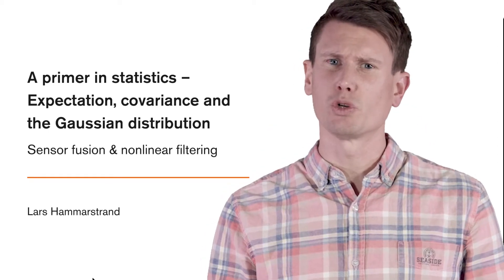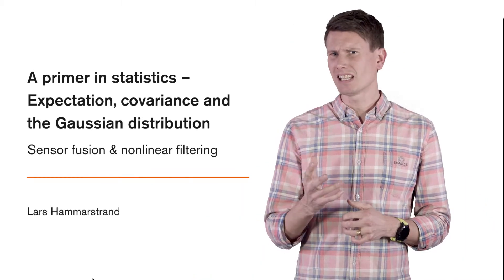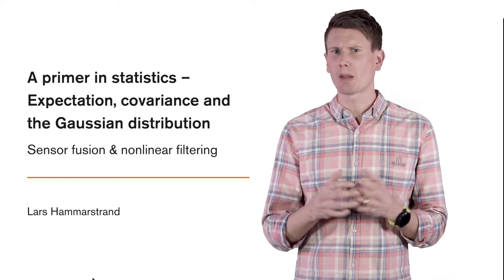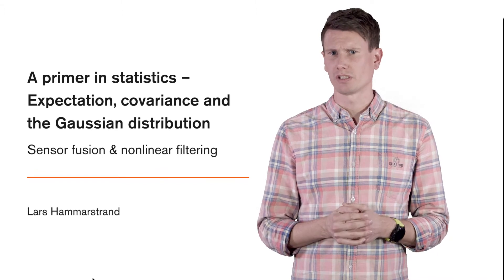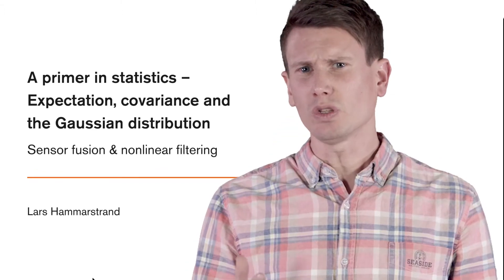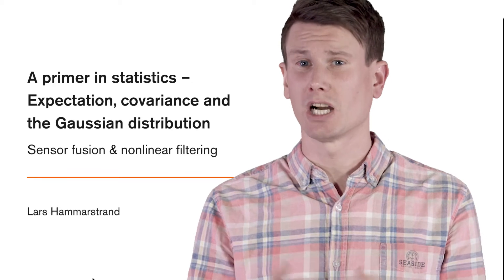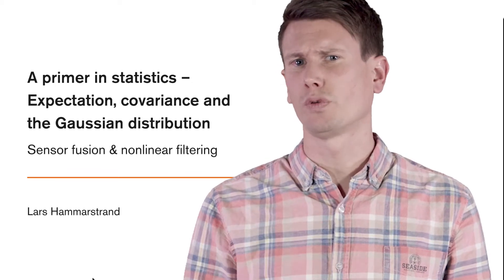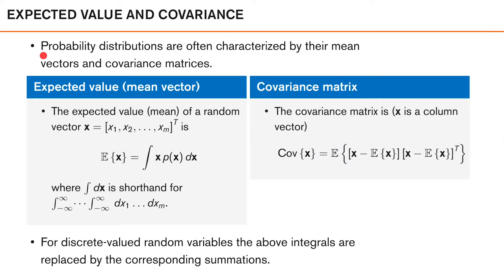The single most important distribution for sensor fusion and nonlinear filtering is the Gaussian distribution. In many cases, our goal is to describe our results using the mean vector, or expected value, and the covariance matrix of a Gaussian distribution. And if our result is not Gaussian, we anyway tend to approximate our results using the mean and covariance of this non-Gaussian distribution, even though these do not fully capture all the facets of our actual distribution. So, probability distributions are often characterized by their mean vectors and covariance matrices.